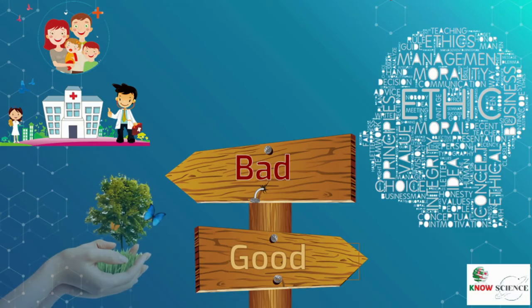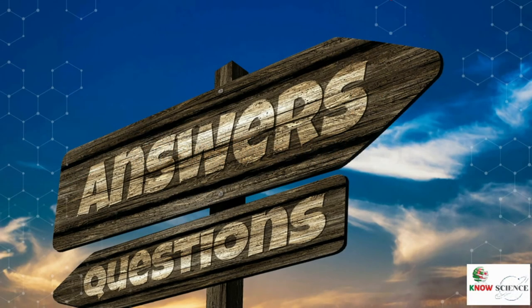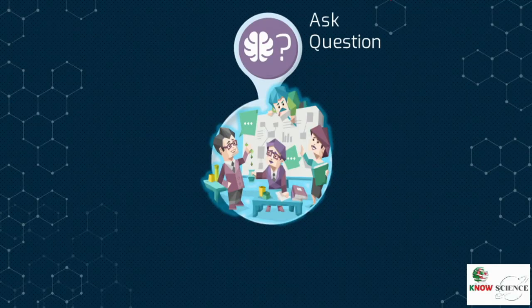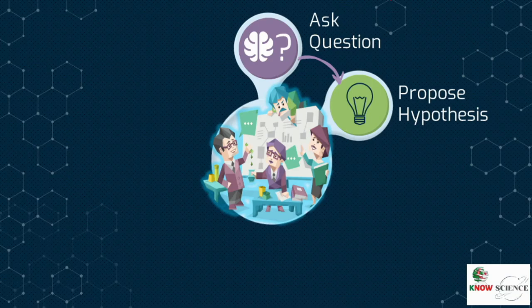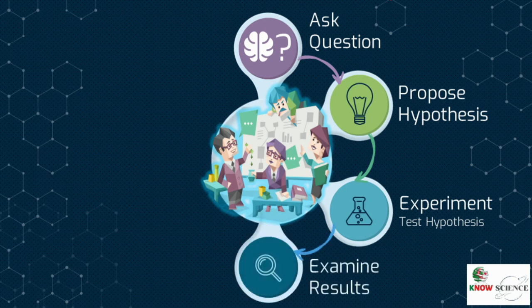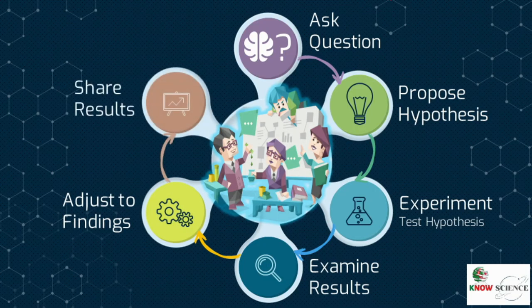The scientific method builds the core of the scientific process to produce reliable and reproducible knowledge. It consists of asking a question about something to be explained, proposing a possible solution called a hypothesis, testing this hypothesis through a series of experiments, examining the results to see if the hypothesis has been supported or refuted, and then proposing a new question or a new hypothesis.